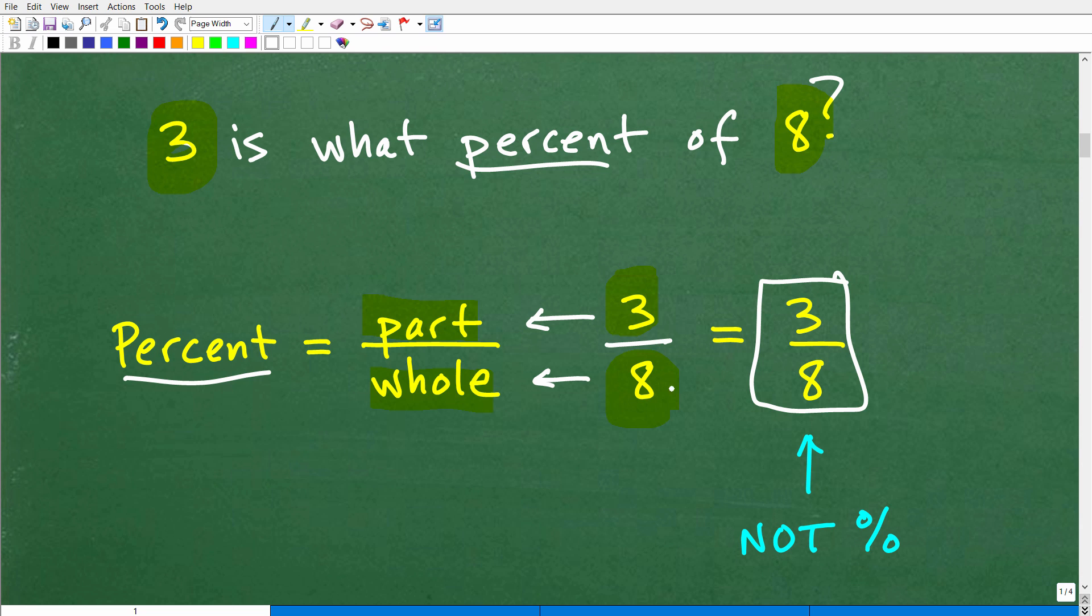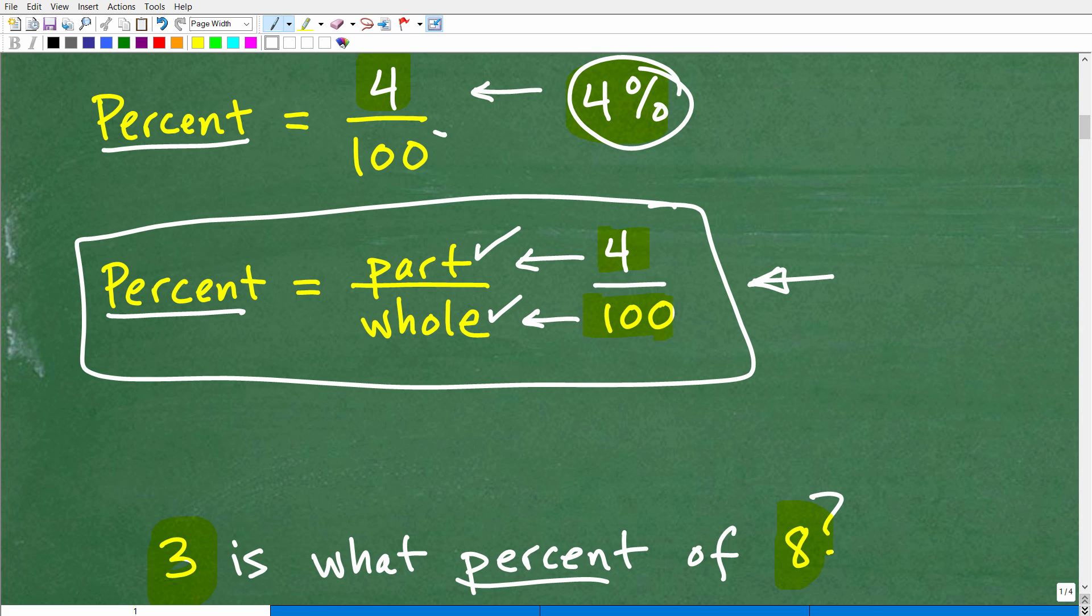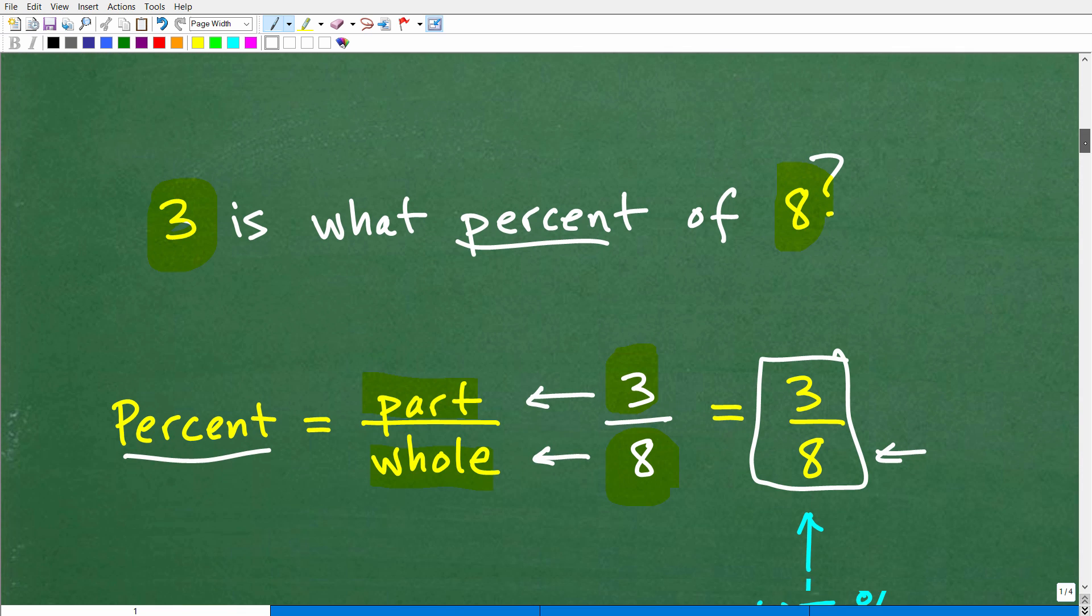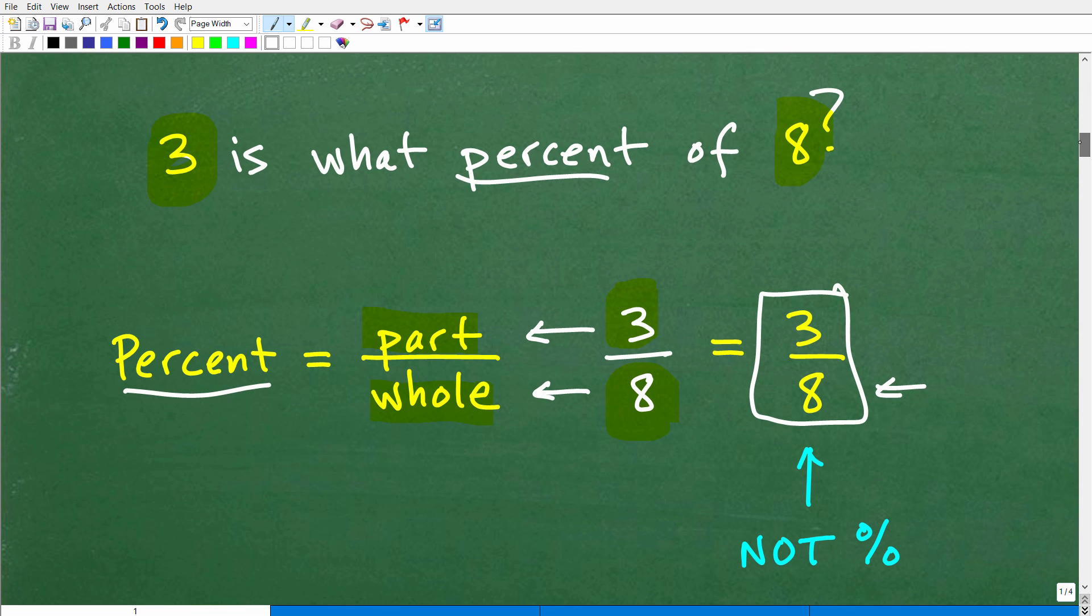Why is this not percent? Because remember, the definition of percent is the denominator over here has to be 100. Like 4 out of 100, this number is 4%. Here we have 3 over 8, so this is not 100. We're going to have to do a little tweaking, but this is no big deal.